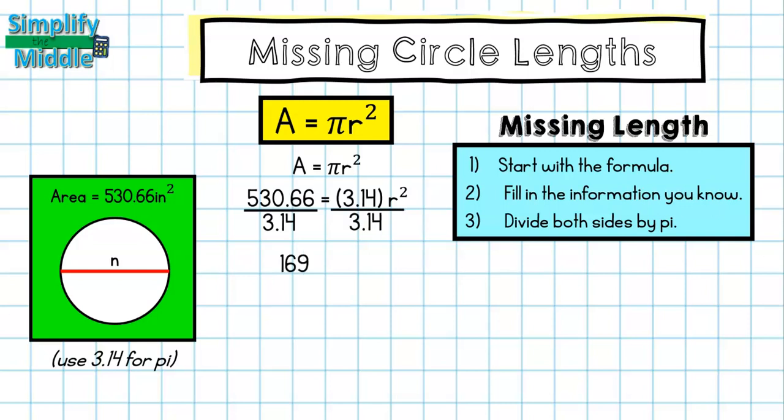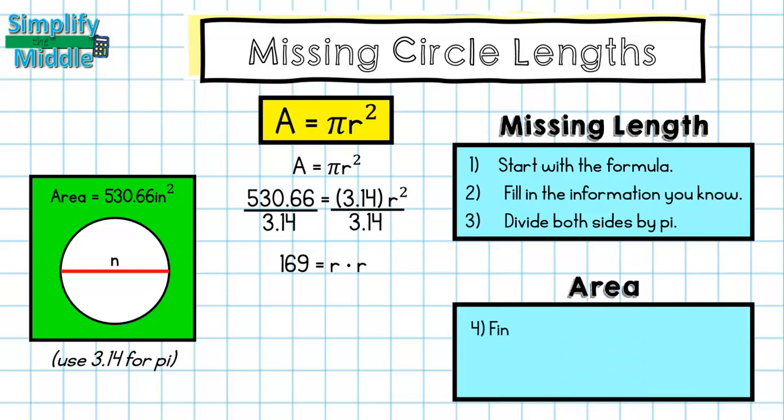After I do that, I end up with 169 equals radius times radius. Now I wrote radius twice right there to remind myself that r squared means radius times radius, not radius times 2. So what I'm really looking for here is the base of the perfect square. So this is a perfect square, 169. So what is the base?